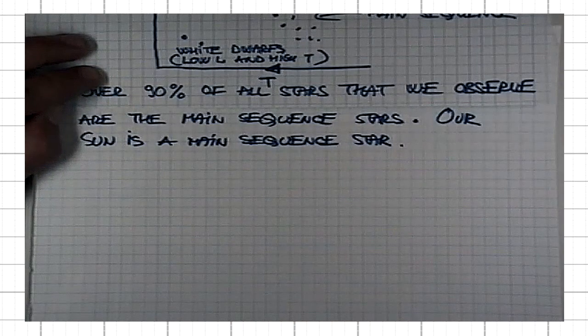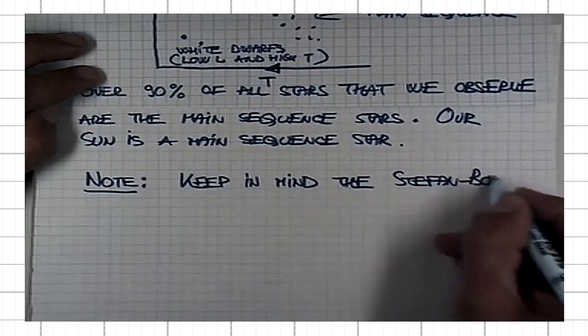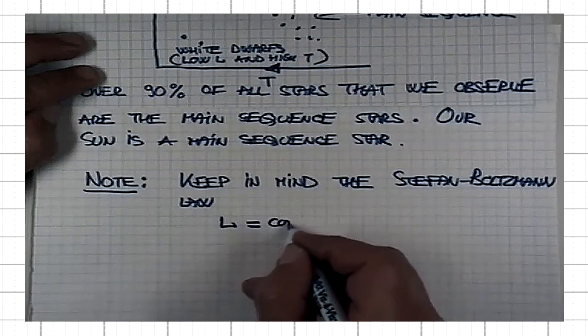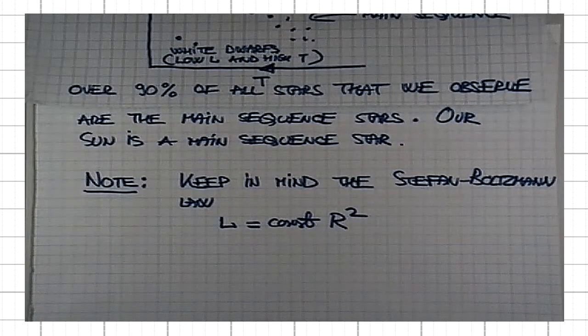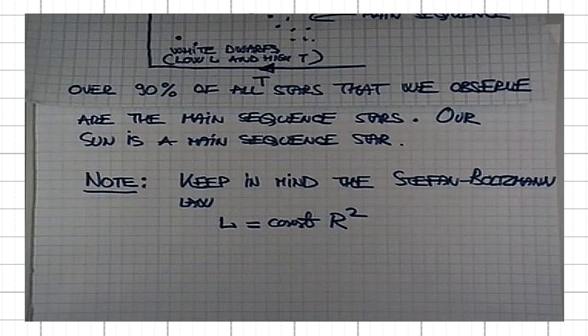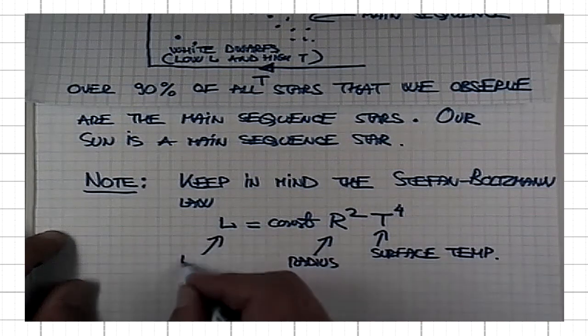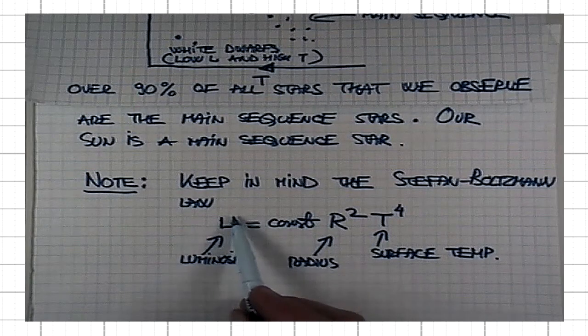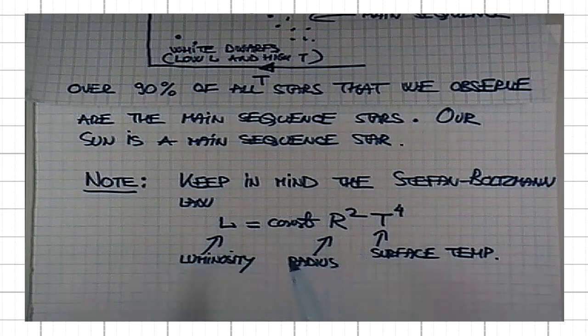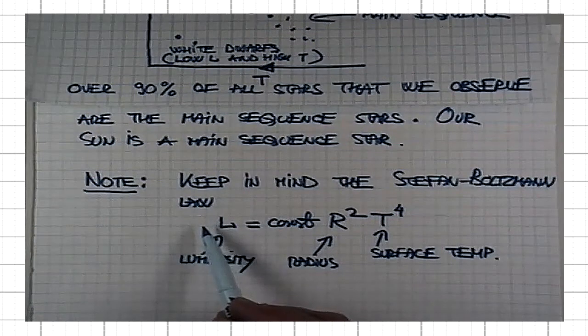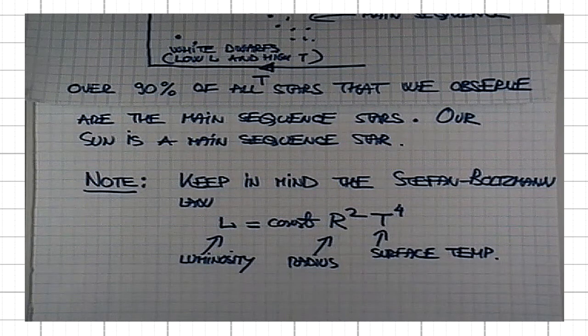In interpreting the HR diagram, keep in mind the Stefan-Boltzmann law, which says that the luminosity is some universal constant times the radius squared. That's because luminosity is proportional to the surface area of the source. If the source is spherical, like stars are, then the surface area is proportional to the radius of the star squared, and the surface temperature to the fourth power. In the case of white dwarfs, you can have very low luminosity with high surface temperature because their radius is very small. In the case of red giants, you have high luminosity with low surface temperature because their radii are huge, so they can compensate for low T by having a very large R.